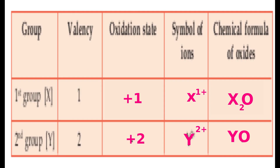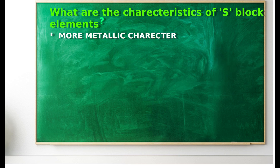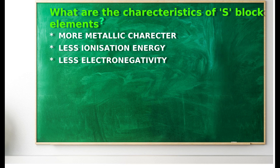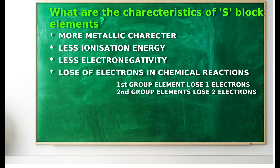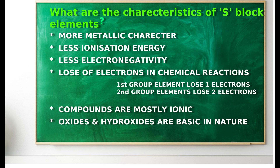From the table, we can observe that first group elements lose one electron when they take part in chemical reactions, and their oxidation state is +1. Second group elements lose two electrons and have a +2 oxidation state. Characteristics of s-block elements: more metallic character, less ionization energy, less electronegativity, loss of electrons in chemical reaction. The compounds are mostly ionic, and oxides and hydroxides are basic in nature.